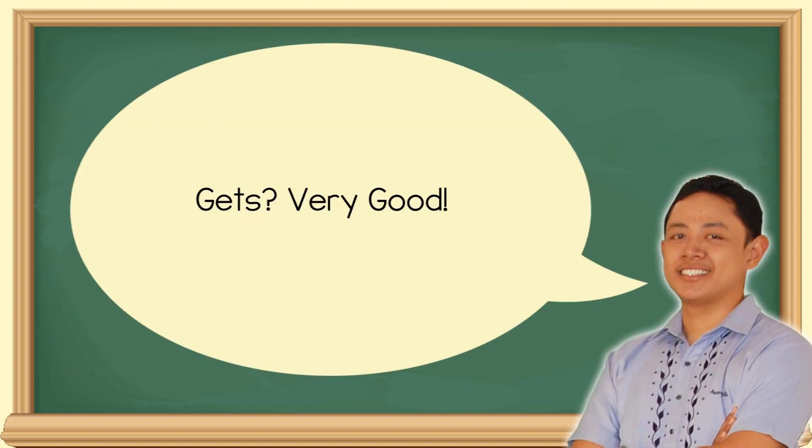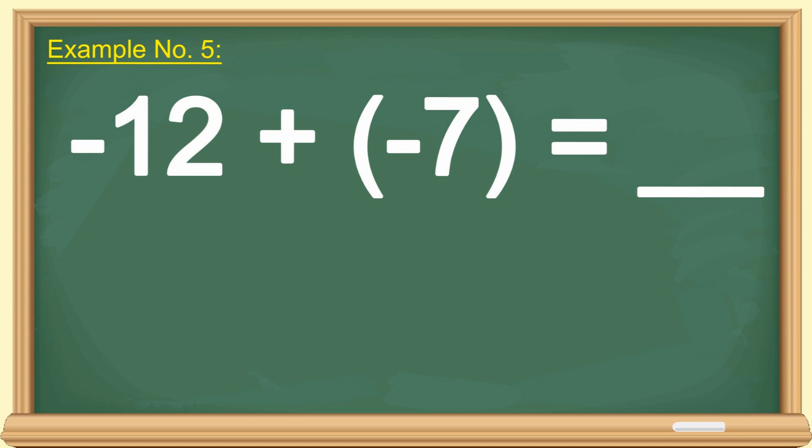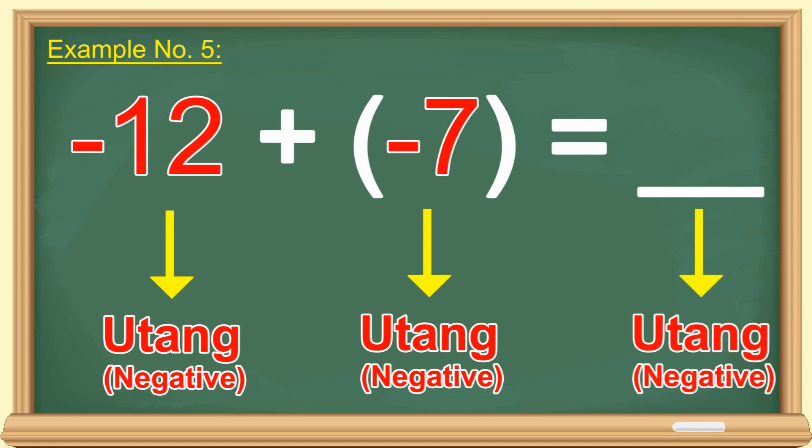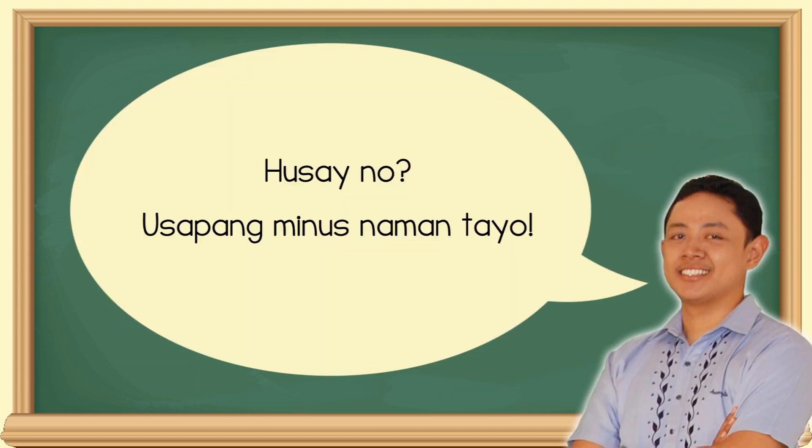Very good. Let's try this next one. Negative 12 plus negative 7 is equal to blank. Heto naman. Anong meron sa negative 12? Utang o pera? Utang. Dagdagan mo pa ang utang mo ng 7 pesos. Ano nang meron? Utang o sukli? Utang pa rin. So, magkano ng utang mo? 12 plus 7 is equal to 19 pesos. At dahil utang, negative 19 yun. Husay, no?